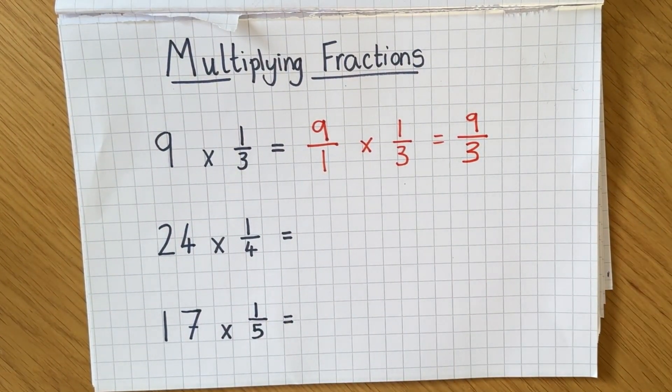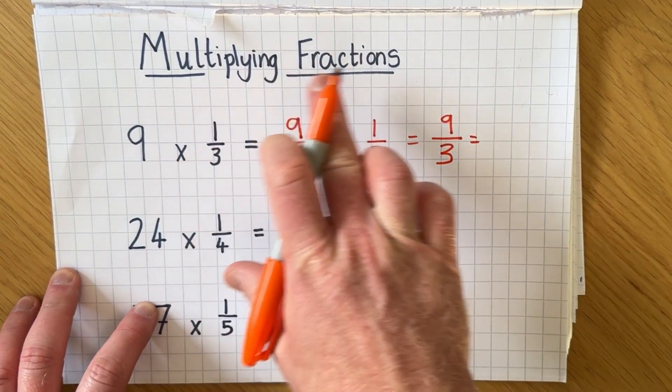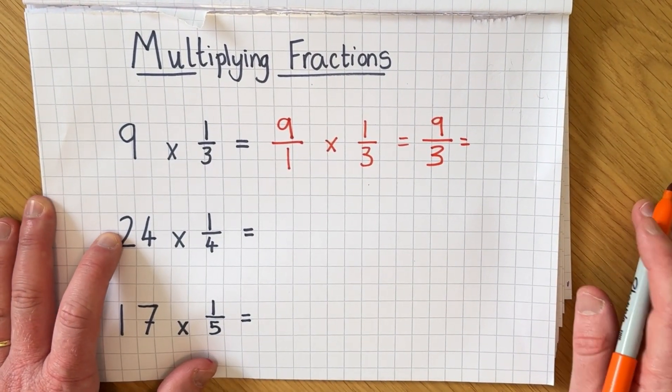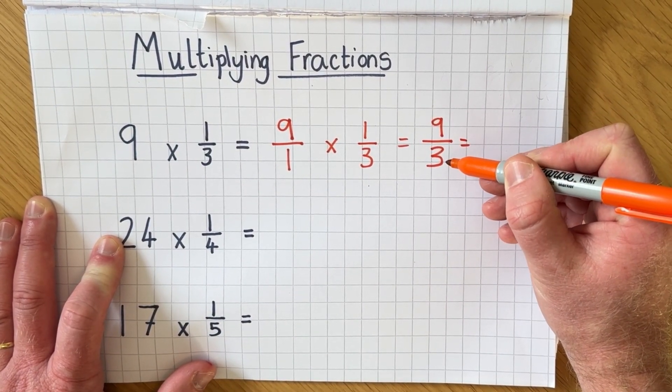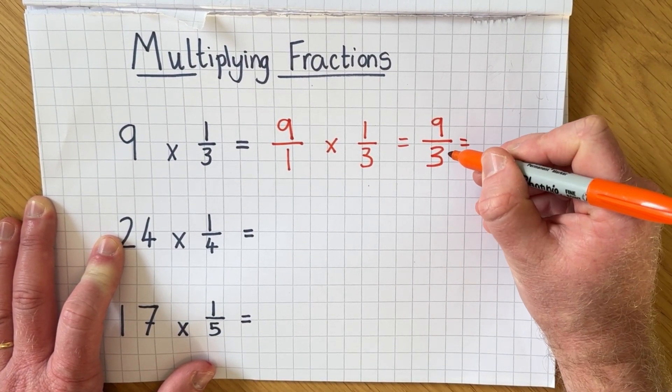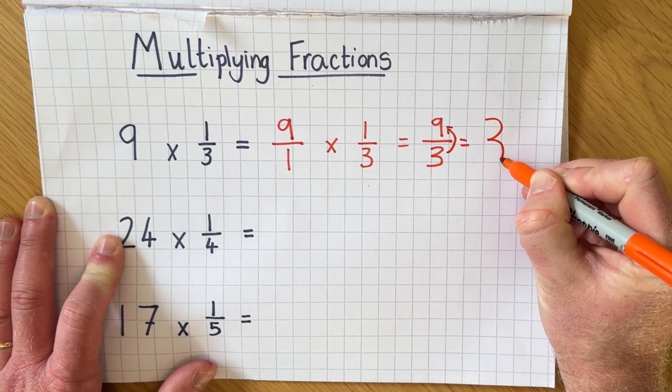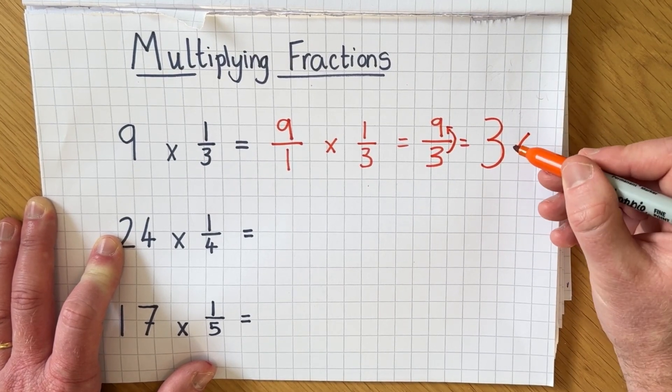But that's not the end of the question because when you're asked to multiply fractions you have to give your answer as a mixed number. So to work out what 9/3 is as a mixed number I just say how many threes in 9? There are three and so the answer for this one is three wholes or three.